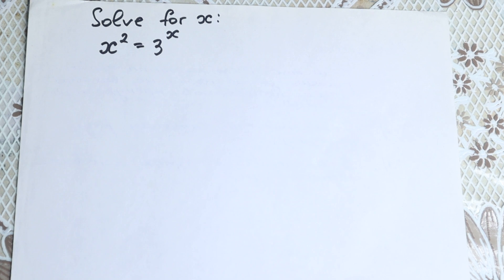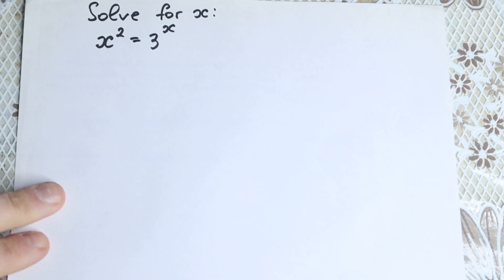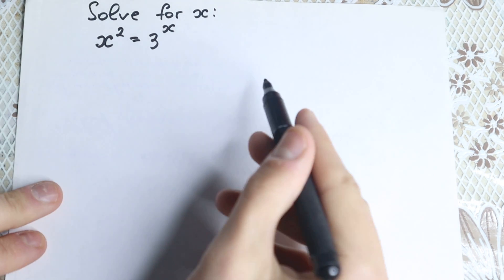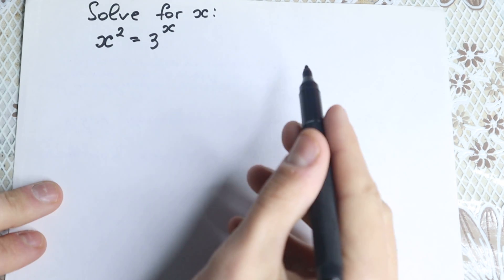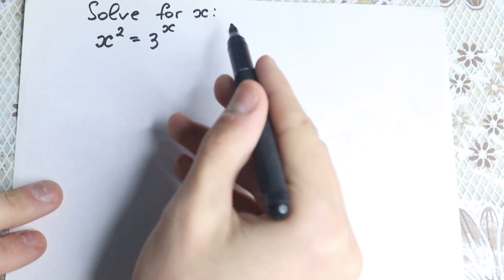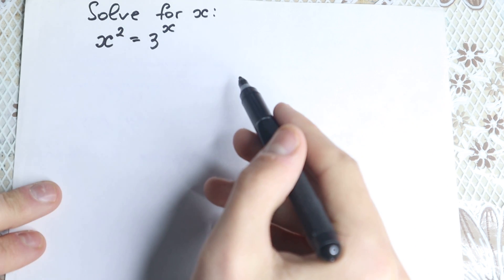Hello everyone! Happy to see you here. Today we have a really interesting exponential equation: x-squared equals 3 to the x. As you can see, no huge numbers, no 10th power, 15th power — we have 2, we have 3, we have only our x.